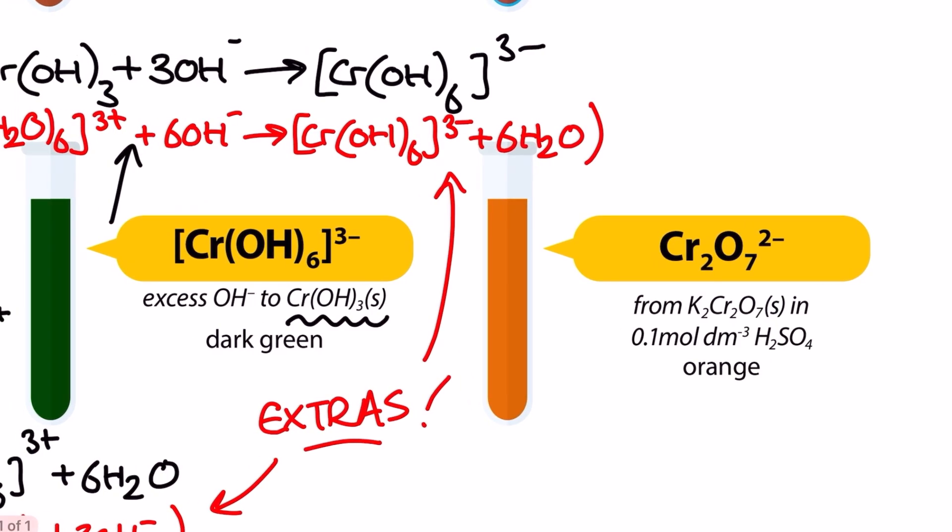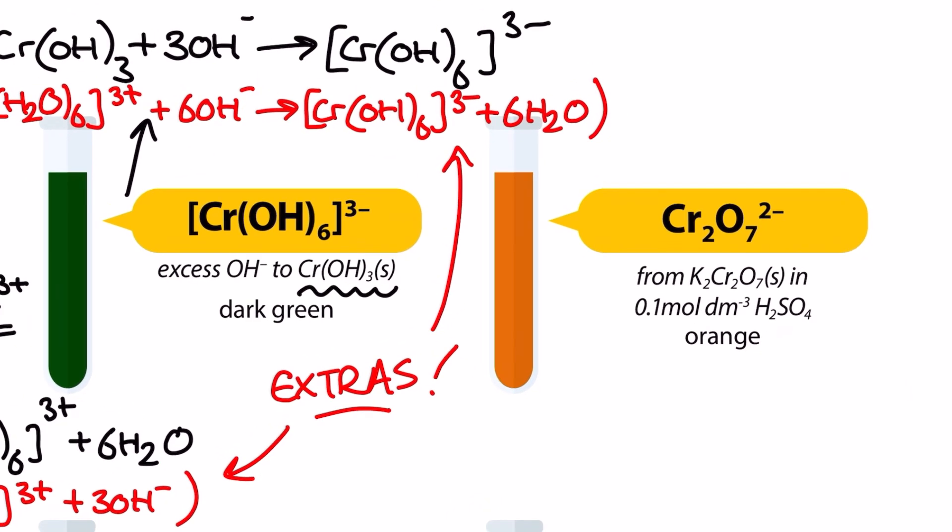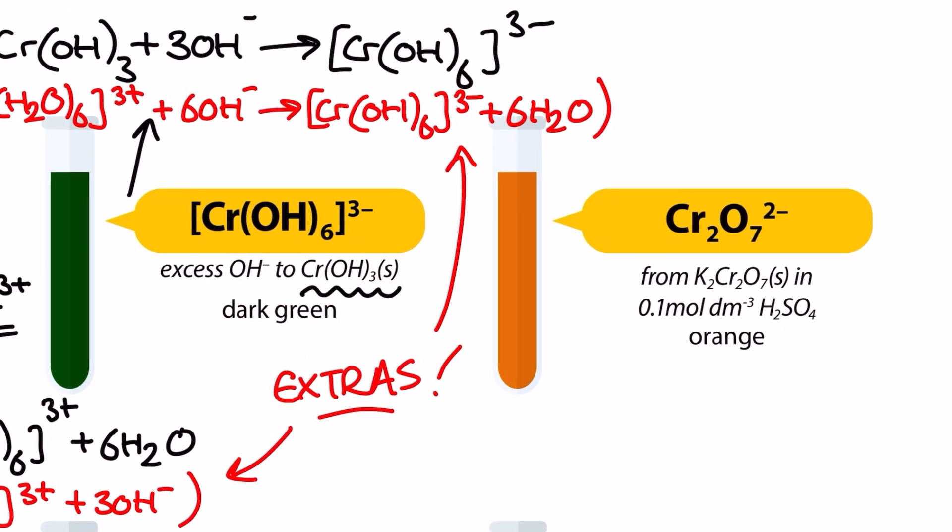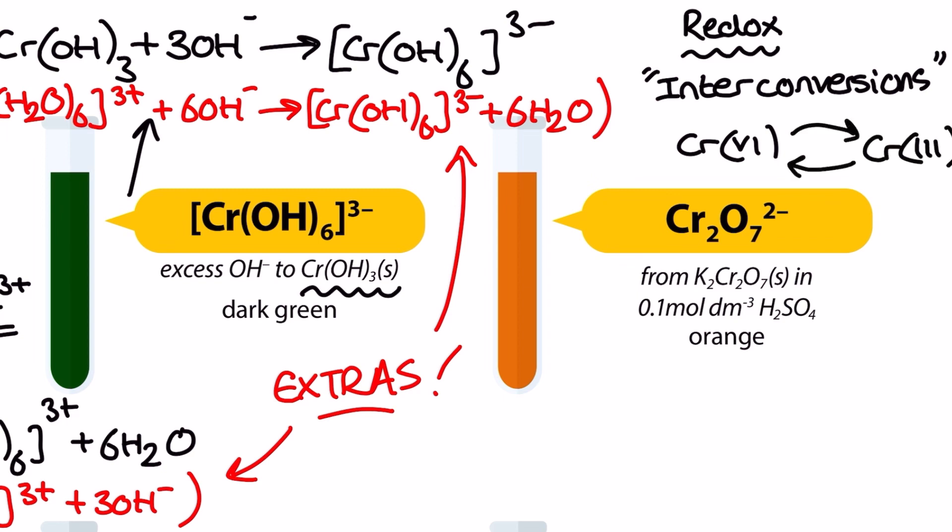On the right over here we have our orange dichromate 6 ion and the context here shifts to redox. So we're moving away from precipitation and ligand substitution and we're now looking at a redox aspect of this sheet. On the OCR specification you need to know how to interconvert between two different oxidation numbers for the chromium. That means moving back and forth between two different oxidation numbers and for the chromium that's plus 6 and plus 3 respectively. The dichromate ion here contains chromium with a plus 6 oxidation number. That's why we call it dichromate 6 and be careful not to write this as a chromium 6 plus ion as it needs those oxygens to be involved.